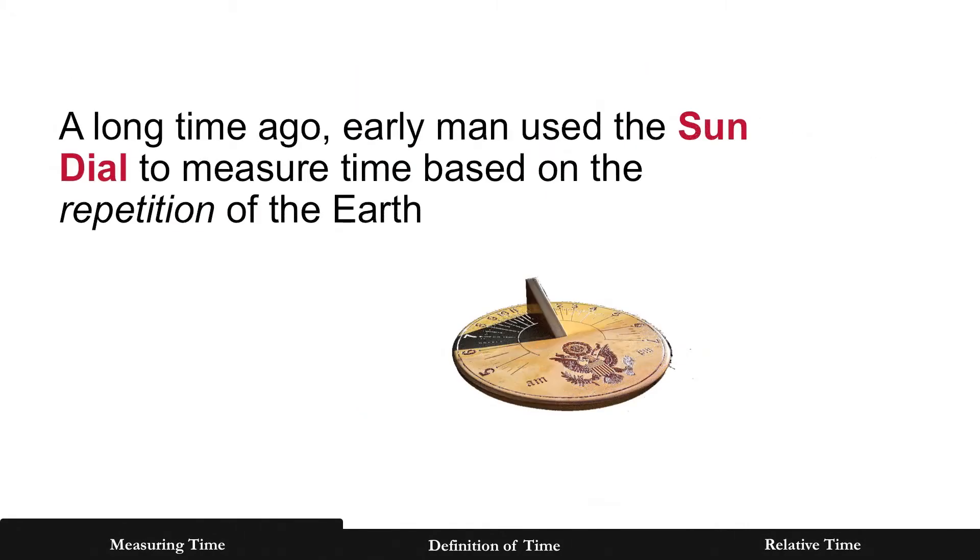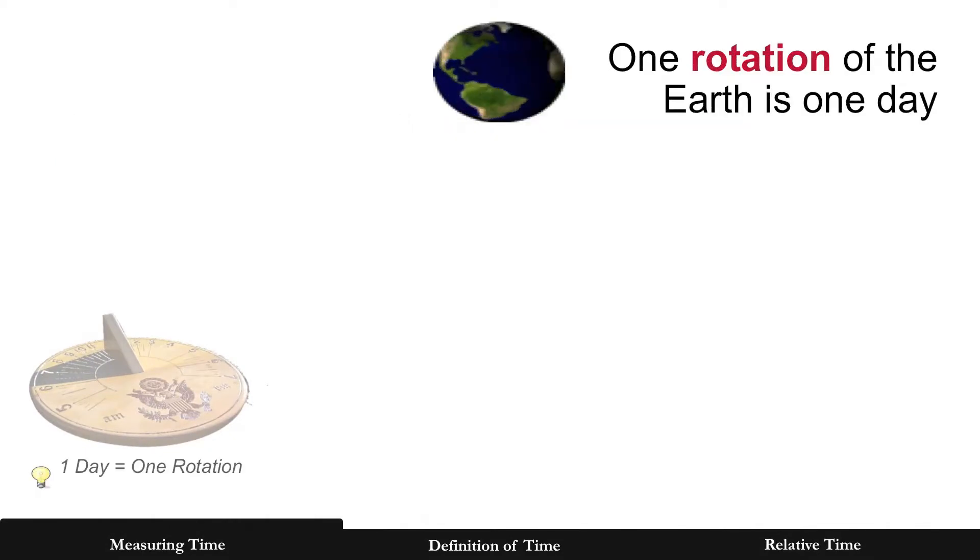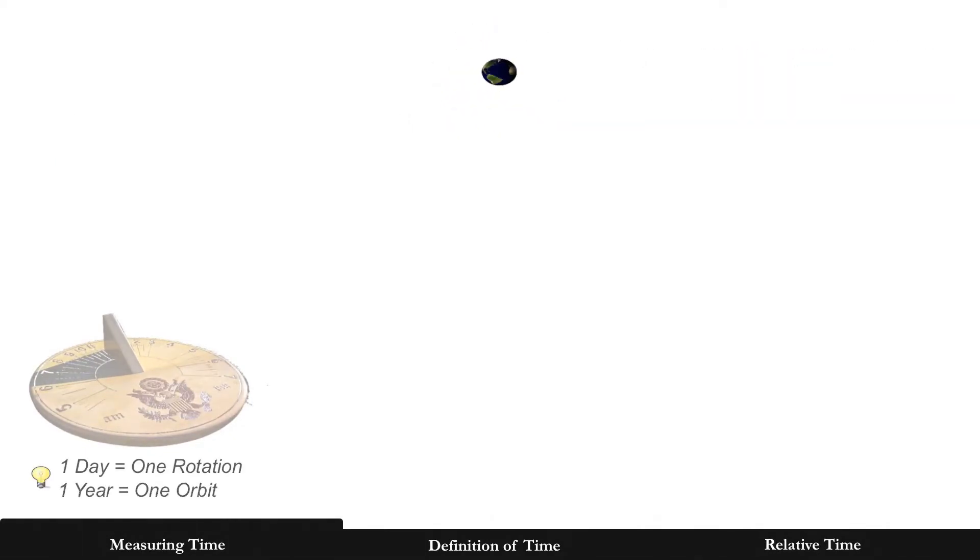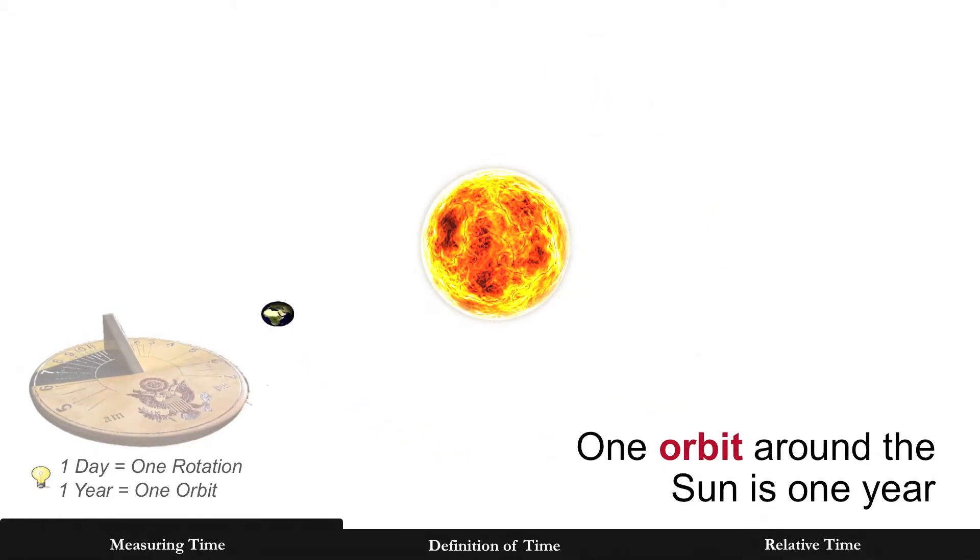A long time ago, early man used the sundial to measure time based on the repetition of the Earth. One rotation of the Earth is one day. One orbit around the sun is one year.